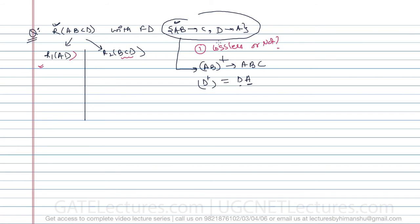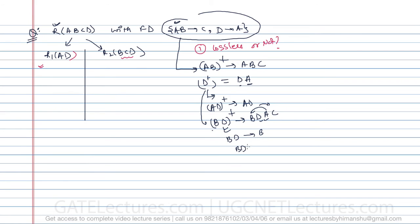If we combine attributes: AD closure = AD only. BD closure gives B, D, A, and C — because D identifies A, and AB together identifies C. So BD closure = ABCD, meaning BD can determine A, B, C, and D. Similarly, CD closure: D gives A, C gives C, but nothing further beyond ACD.